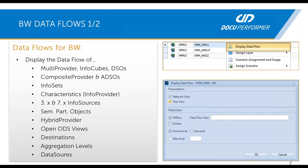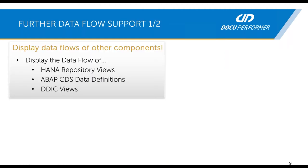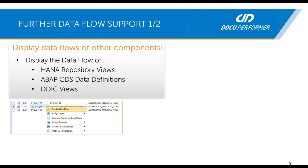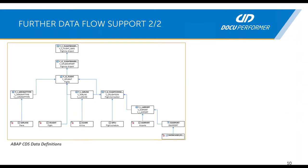After this, such a data flow will get generated by DokuPerformer. You can do the same thing for the HANA component and for other object types like HANA repository views. Here we support the object types: calculation view, attribute views, and analytical views. We also support the data definitions for ABAP CDS and the DDIC views. You can start the data flows also with the context menu, and then we generate such a view of the data flow. The same is also possible for ABAP CDS data definitions.